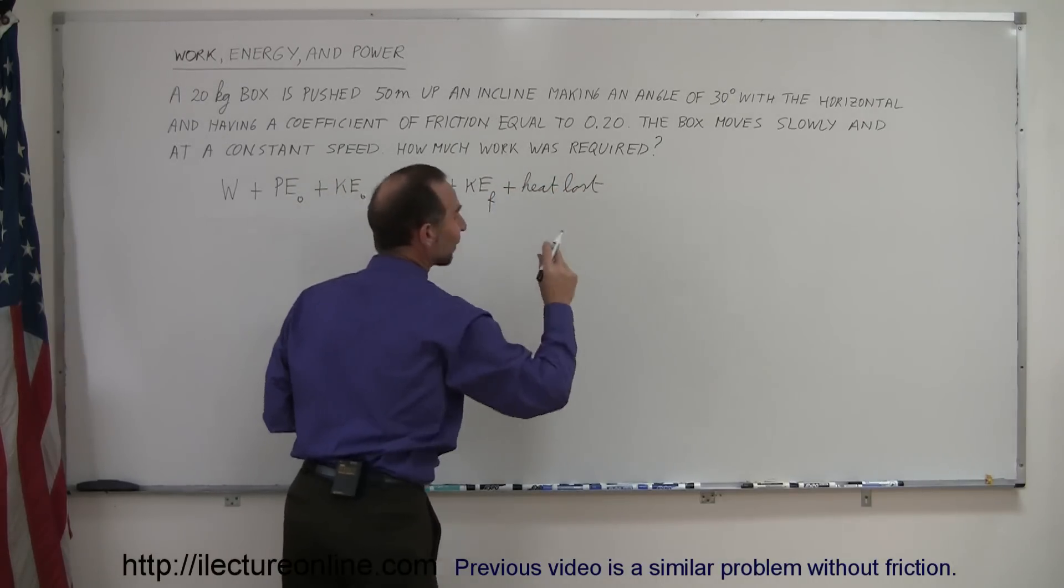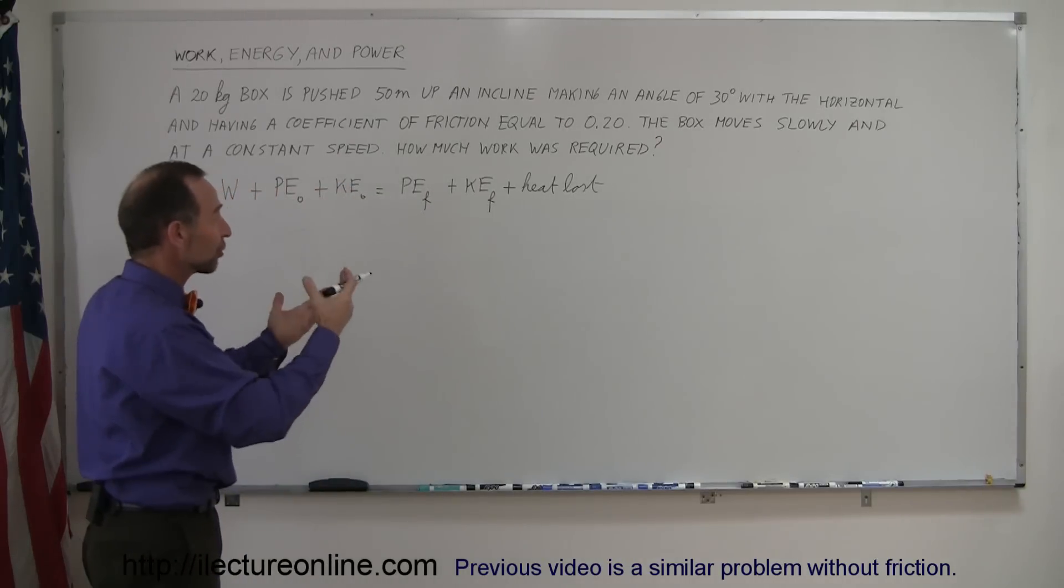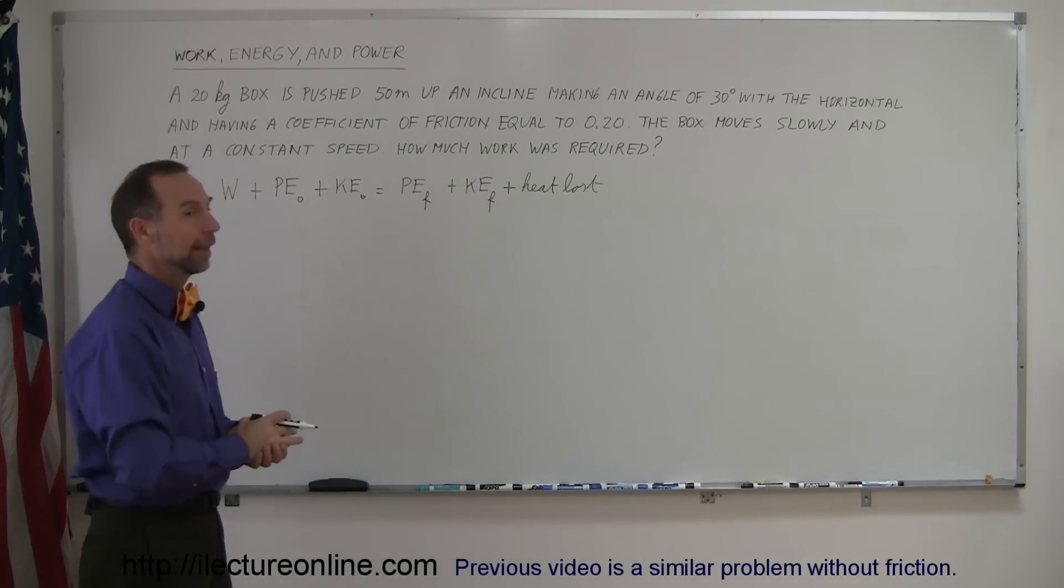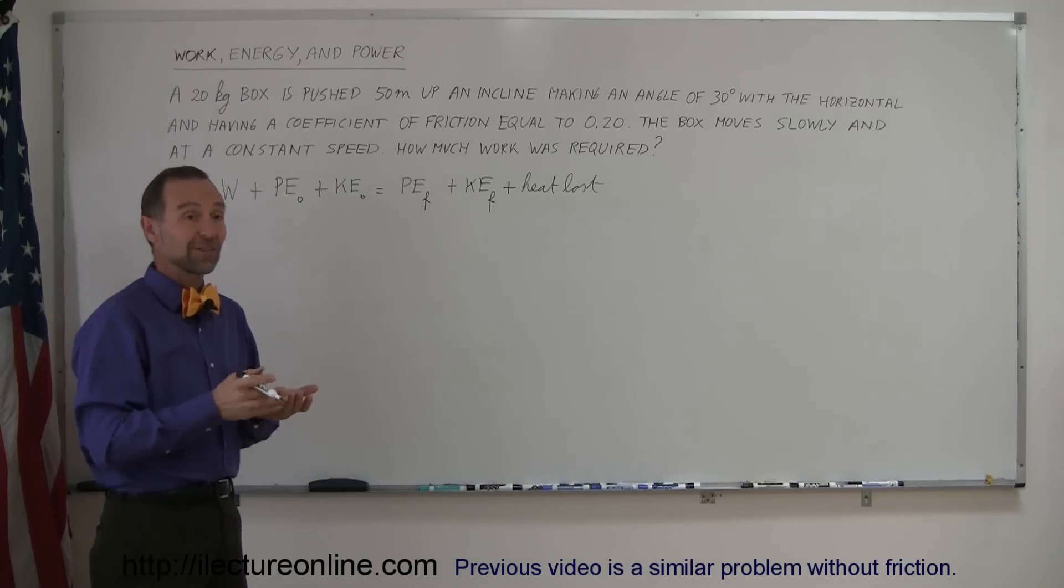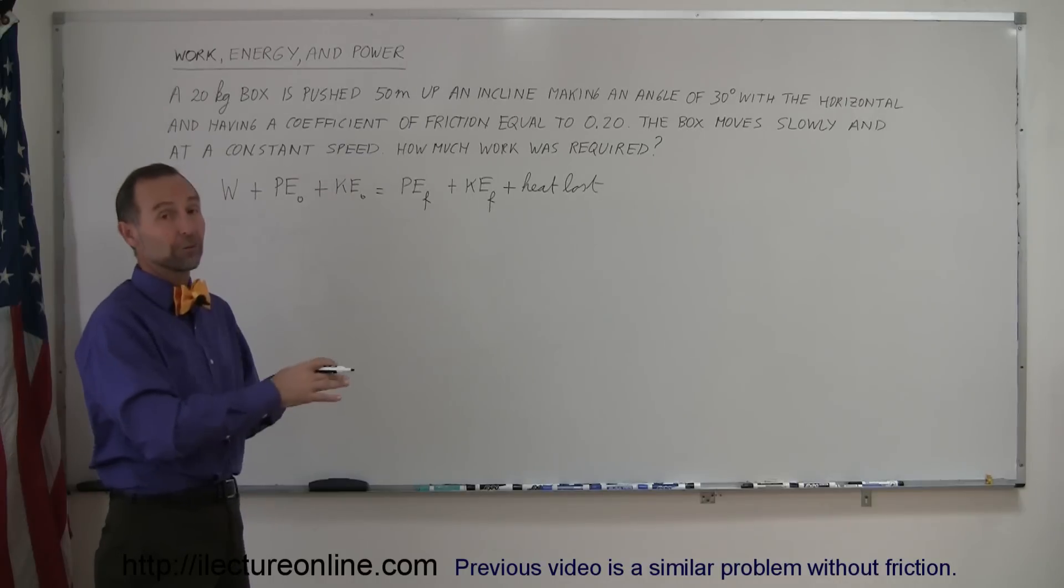plus any heat lost by overcoming friction. So, any time you have to overcome friction or wind resistance or anything like that, you're going to have a term called heat lost, and usually heat lost is also expressed in terms of force times distance, in this case the force may be the friction force times distance.